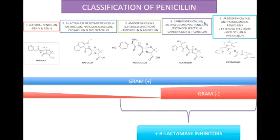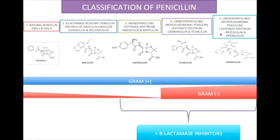The second to last group is the carboxypenicillins, also known as anti-pseudomonal penicillins, which have an extended spectrum including carbenicillin and ticarcillin. Ticarcillin is more active than carbenicillin against P. aeruginosa and Enterobacter species. Lastly, we have the ureidopenicillins, or anti-pseudomonal penicillins, which have extended spectrum and include mezlocillin and piperacillin. All groups are active against gram-positive organisms; however, groups 1, 2, and 3 have little to no effect against gram-negative and only groups 4 and 5 have activity against gram-negative organisms. Aminopenicillins, carboxypenicillins, and ureidopenicillins are usually combined with beta-lactamase inhibitors.